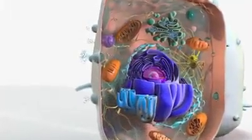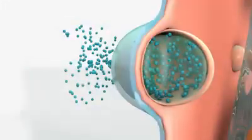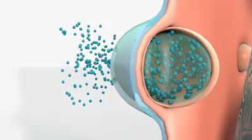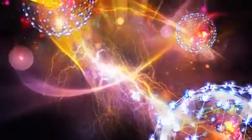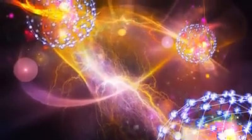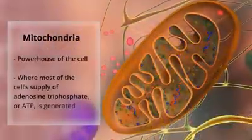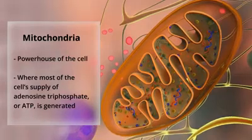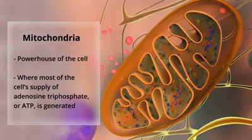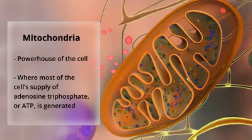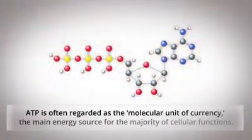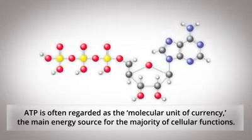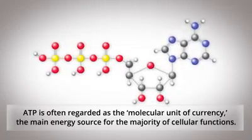When a vesicle is secreted from the cell, it fuses with the plasma membrane and releases its content in regulated bursts. All of these complex molecular processes require energy. The mitochondria are the powerhouse of the cell, the organelle where most of the cell's supply of adenosine triphosphate, or ATP, is generated. ATP is often regarded as the molecular unit of currency, the main energy source for the majority of cellular functions.